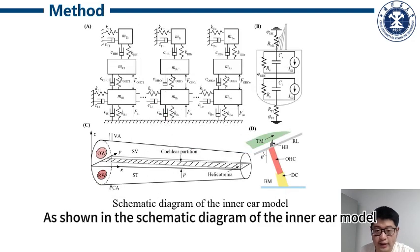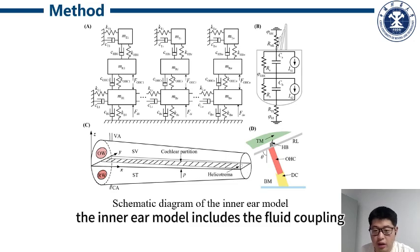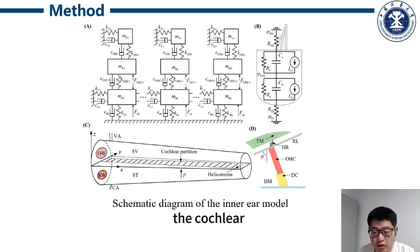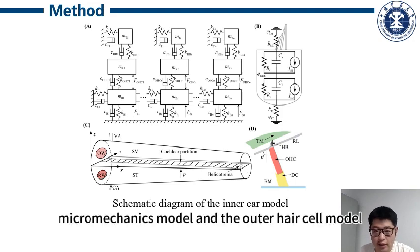As shown in the schematic diagram of the inner ear model, the inner ear model includes the fluid coupling, the cochlear micromechanical model, and the outer hair cell model.